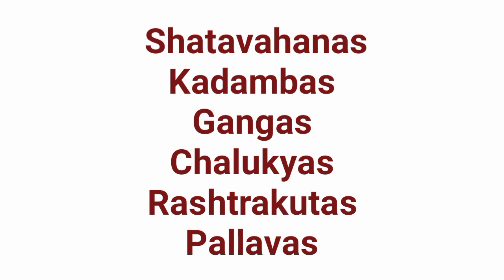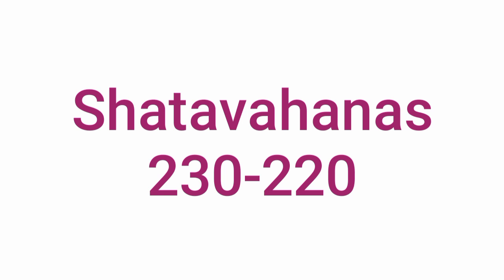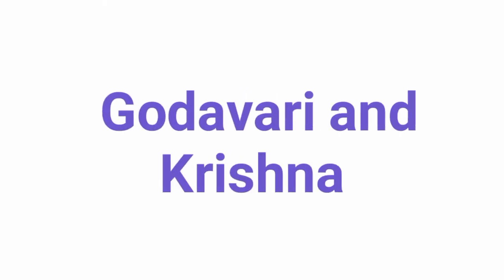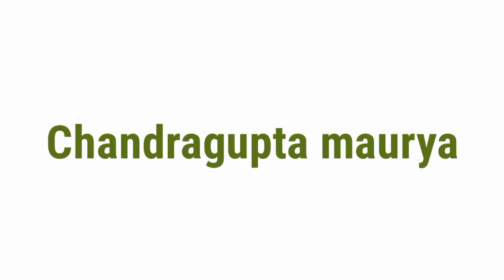These were the important dynasties of this region. Now let us see the Shatavahanas. Our first dynasty, the Shatavahanas, started from 230 BCE and ended around 220 CE. The Shatavahanas were the first to have established a dynasty in the Deccan — that is, south India. They had settled in the land between the Godavari and Krishna rivers. They were the vassals of Chandragupta Maurya and were paying tribute to him. In 220 BCE, Simukha became independent and made Sirikakulam his capital.